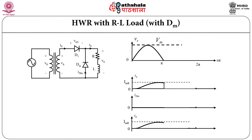If you connect a freewheeling diode as shown in this figure, during the positive half cycle the current flows as shown. Current will not become zero immediately. But during negative half cycle, the output voltage will reverse. Therefore, diode Dm, which is called the freewheeling diode, conducts. So the current will still continue through the load even though diode D1 is turned off. The output DC voltage is increased in this case.